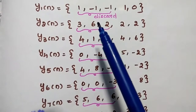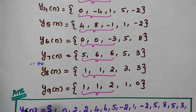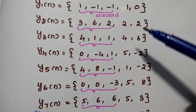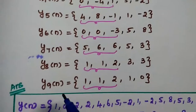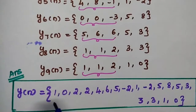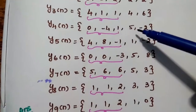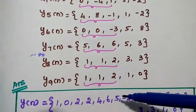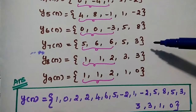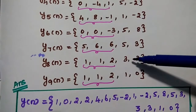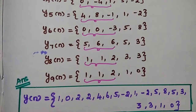Here M minus 1 equals 3, so we discard the first 3 data points from each output block and combine the remaining values. The final output answer is: {1, 0, 2, 2, 4, 6, 5, -2, 1, -2, 5, 8, 5, 3, 3, 3, 1, 0}.